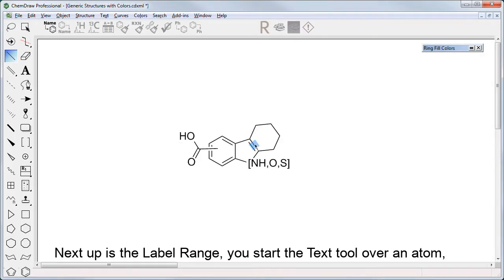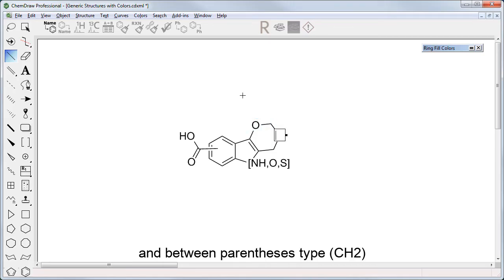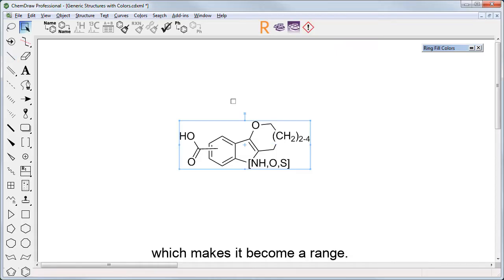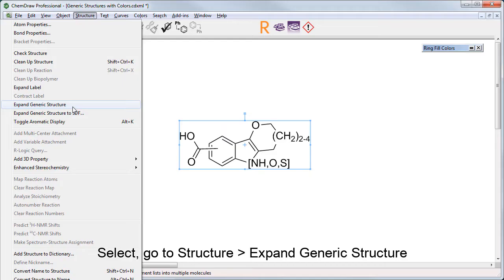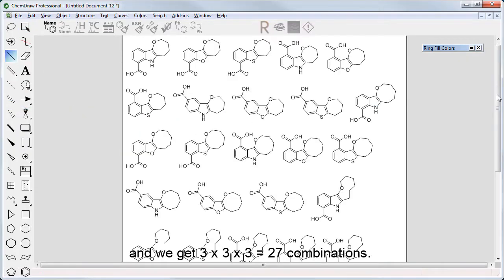Next up is the label range. You start the text tool over an atom, and between parentheses you type CH2, followed by 2, hyphen, and 4, which makes it become a range. Select, go to Structure, Expand Generic Structure, and we get 27 combinations.